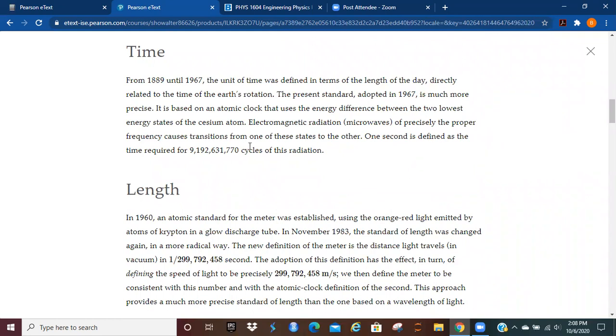You can see the definition of time here, that from 1889 to 1967, it was defined in terms of the length of the day, directly related to the time of the Earth's rotation. At present, however, you're basing it on an atomic clock that uses the energy difference between the two lowest energy states of the cesium atom. And as that turns out, the one second is defined as the time required for that number of cycles of that particular radiation.